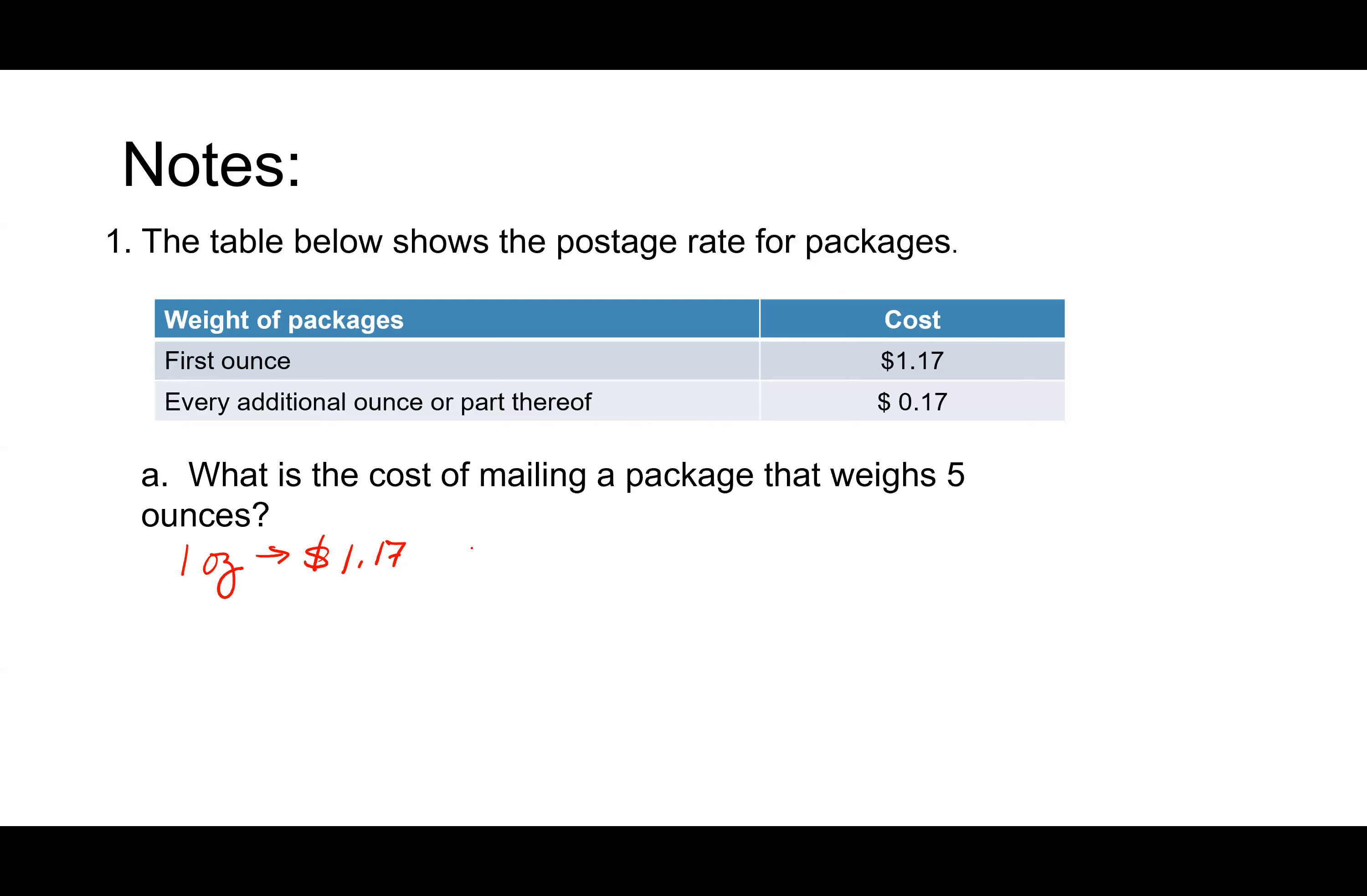So you did one ounce is a dollar 17 cents. That's the first ounce, right? Then you have four left over. So one ounce at the second rate is 17 cents. And we need to know what four ounces is. And so you multiplied 17 times four and you got 68 cents. And then you added them together. Great job. $1.85 is correct.